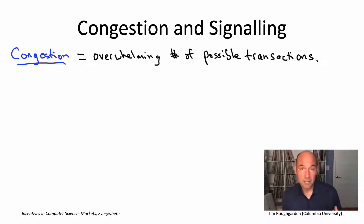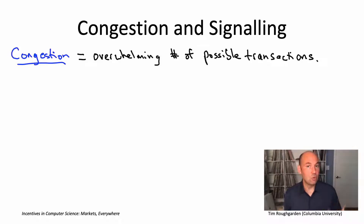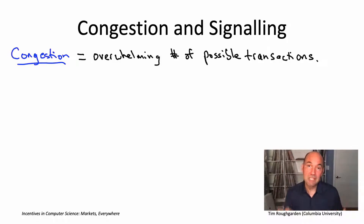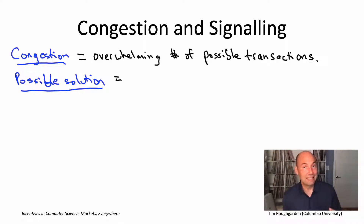Specifically, if you have a decentralized market, meaning participants are able to choose their own transactions, and you have congestion, then there are just far too many options for users to explicitly evaluate. In some cases this is as simple as building really good search functionality or a really good recommendation system into your platform, but sometimes you need to do more. One specific thing you could do on top of that is signaling.